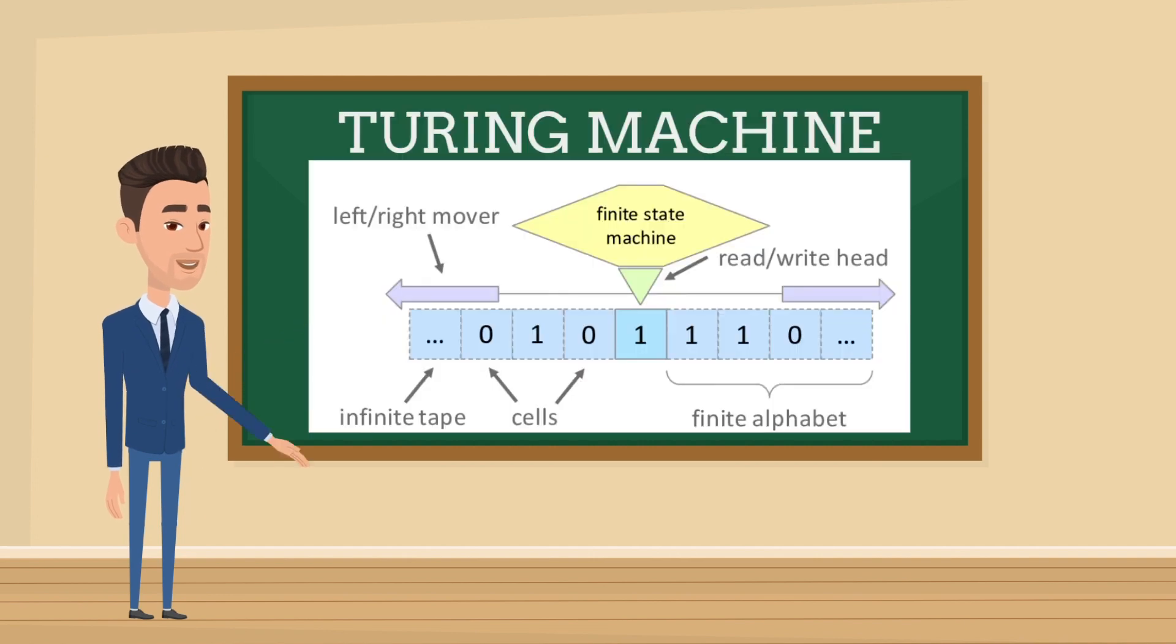A Turing machine consists of an infinite tape, a read or write head, and a set of rules. The head reads and writes symbols on the tape based on these rules, simulating the logic of computation.